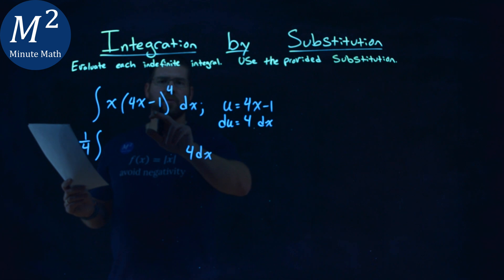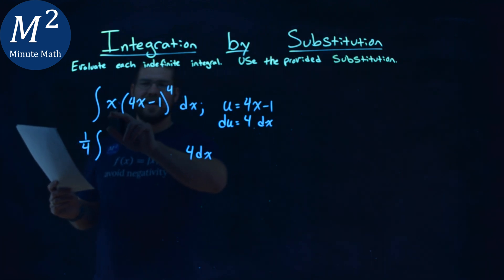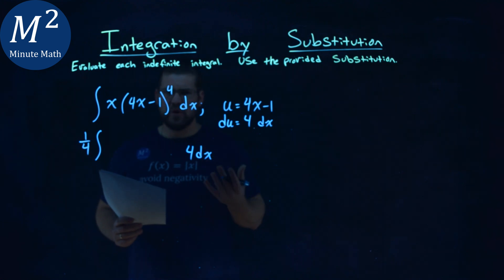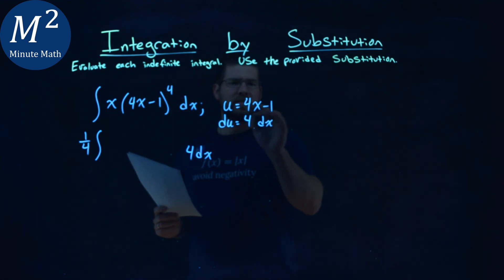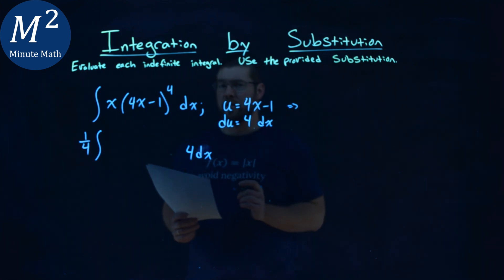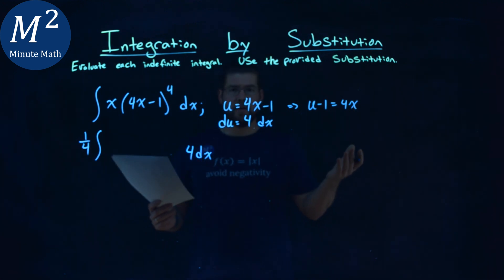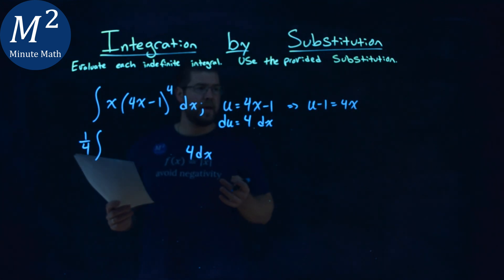And my u-value is my 4x minus 1, great, got that in, but I have that pesky x out there, and I need it in terms of u. Well, what if I did this? What if I said, we have u equals 4x minus 1, u minus 1 equals 4x. Well, that'd be great, right? We can directly substitute that in.